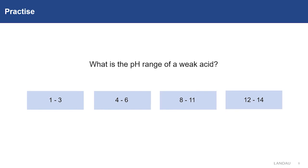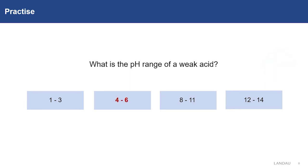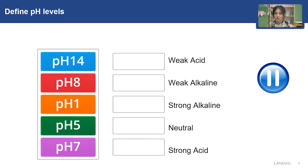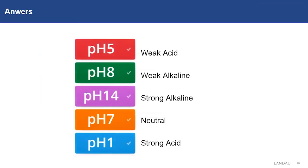Now it's practice time. Please pause the video and answer: what is the pH range of a weak acid? The answer is the second option: 4 to 6. For the second task, match these pH values: pH 5 is weak acid, pH 8 is weak alkaline, pH 14 is strong alkaline, pH 7 is neutral, and pH 1 is strong acid.